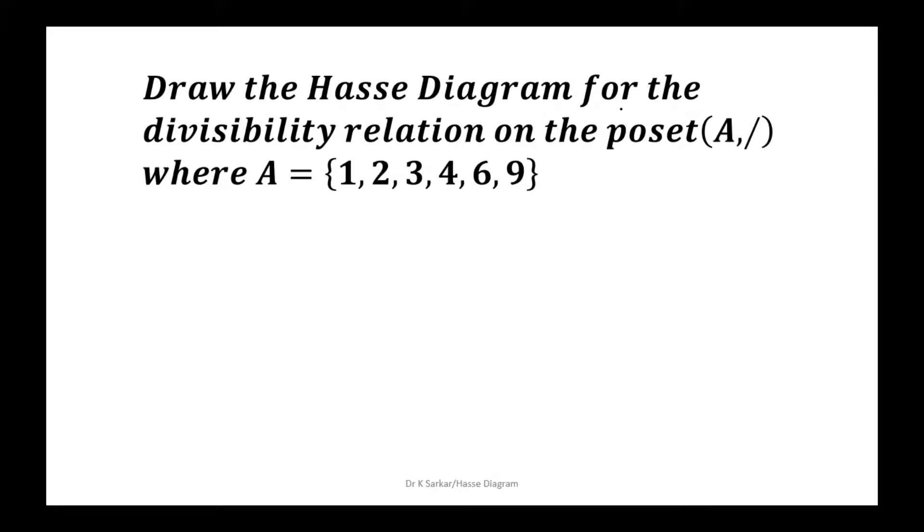Let us draw the Hasse diagram for the divisibility relation on the poset. Here, one is the only element that divides all other elements and is smallest. Hence it is placed at the bottom.